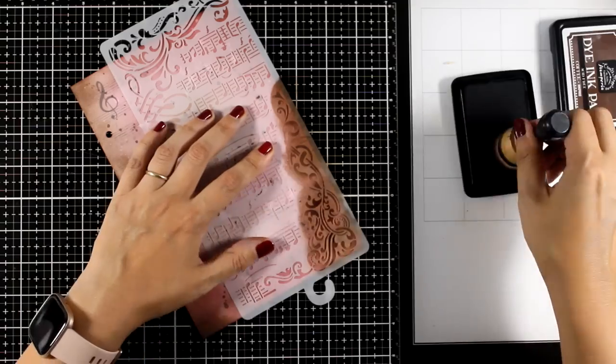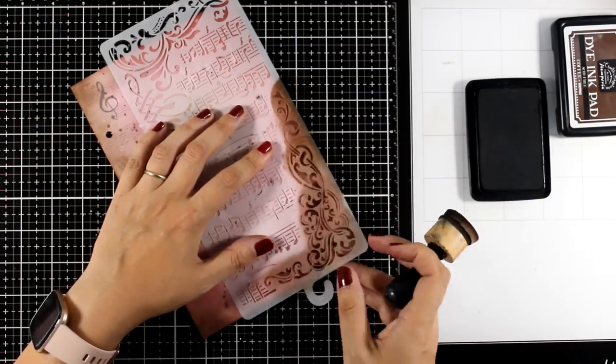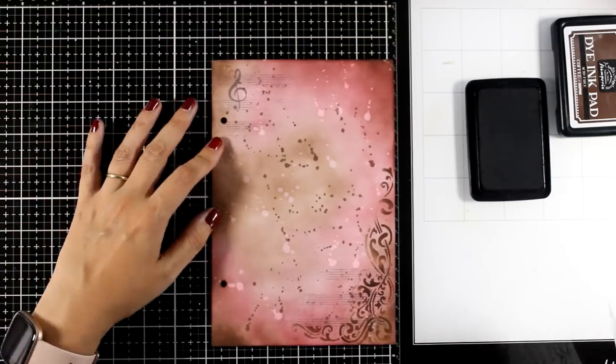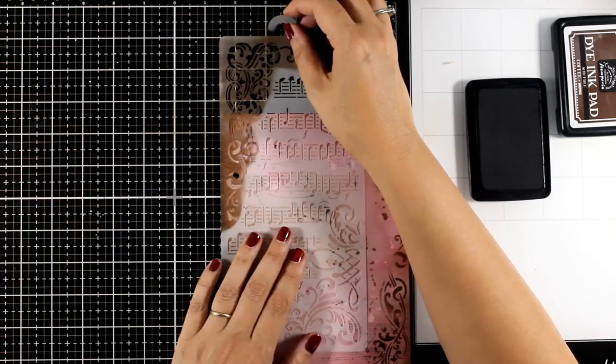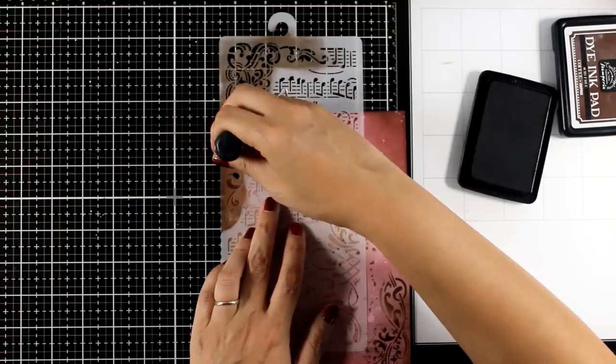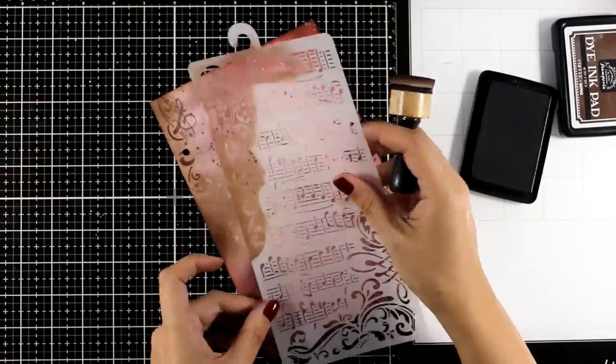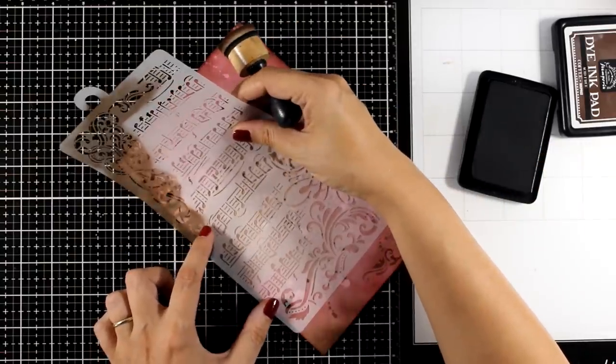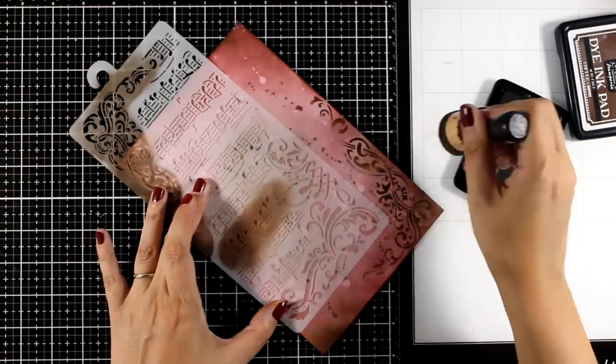If you want a really vibrant background that stands out you can go with black ink. However, I wanted a more subtle look that blends lively with the rest of the colors already in my background. That's why I went with coffee dye ink, and I'm going to add a little bit on the other corner and also some of those notes here and there to enhance the design that is already there on my background.